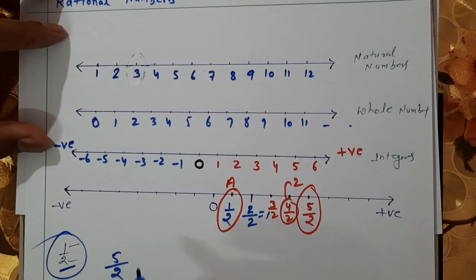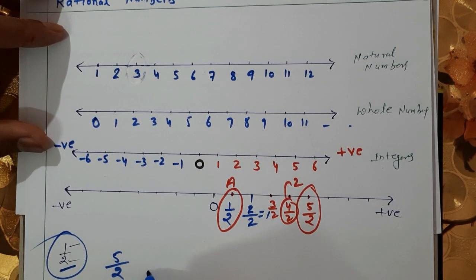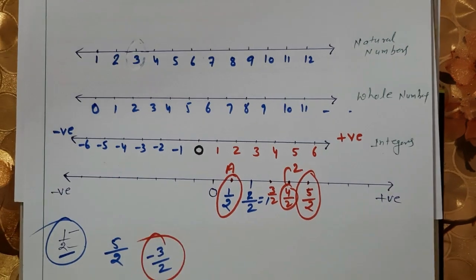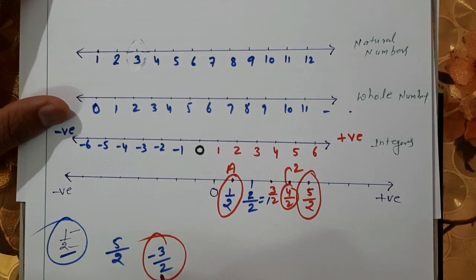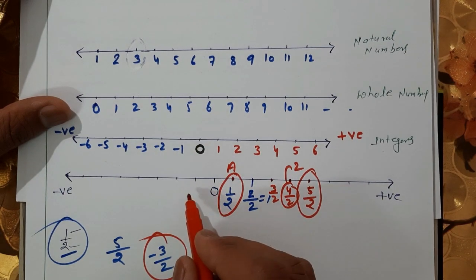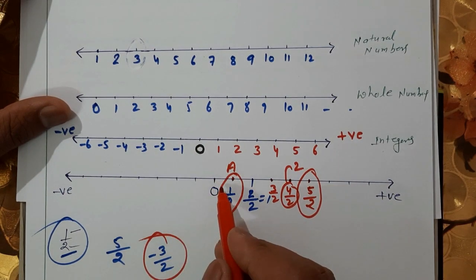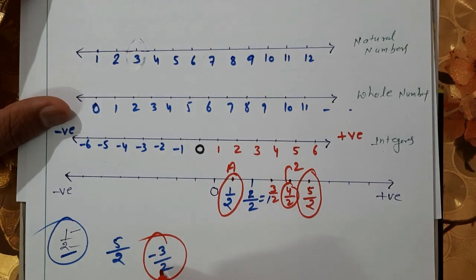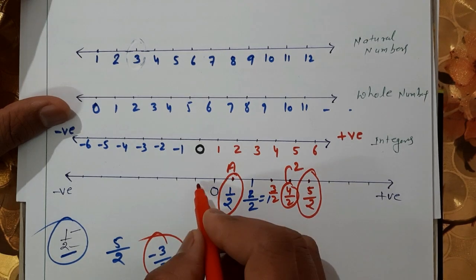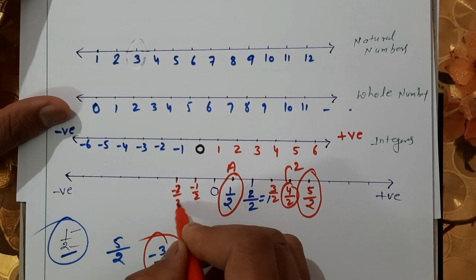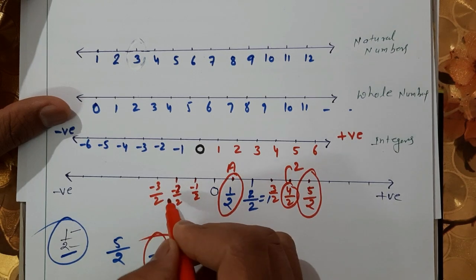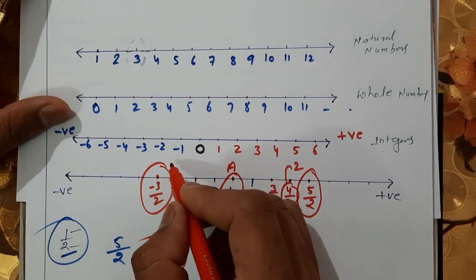Now, if we wish to represent minus 3/2. Since minus 3/2 is a negative number, it will lie on the number line to the left side of 0. Counting from 0 to the left: minus 1/2, minus 2/2, and minus 3/2. This point will be minus 3/2.